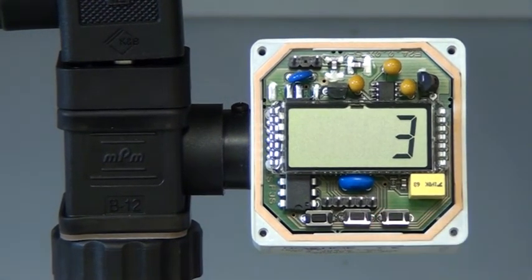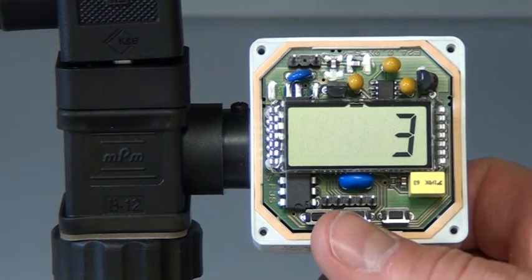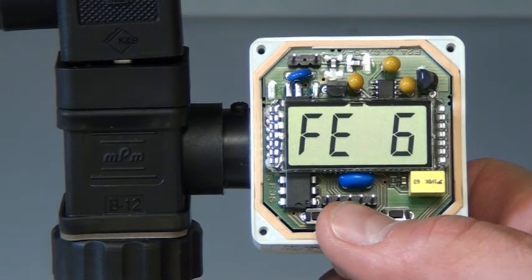That concludes the programming process of the NoShock 1800 Attachable Loop Powered Indicator. To return to the measurement mode, press B until the display briefly reads FE6.